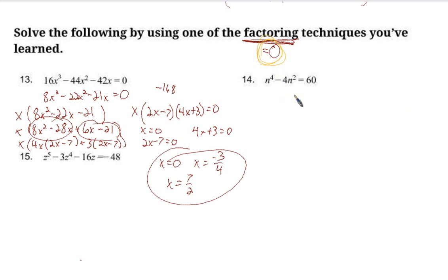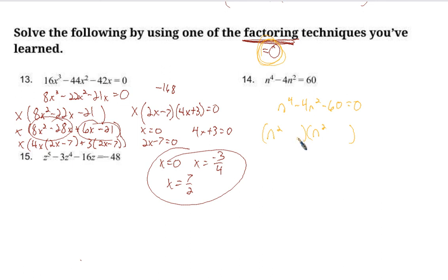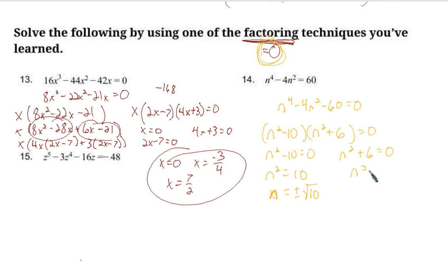Equals 0 is very important when factoring. Subtract to get n⁴ − 4n² − 60 = 0. This is in quadratic form — n⁴ and n² instead of n² and n. Factor as (n² − 10)(n² + 6) = 0. So n² = 10 gives n = ±√10, and n² = −6 gives n = ±i√6.